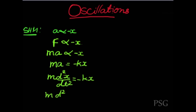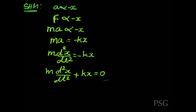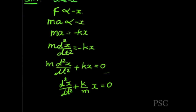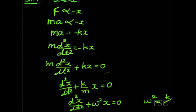This can be further written as m times d²x/dt² equals minus kx. Bringing the right-hand side to the left: m·(d²x/dt²) + kx = 0. Dividing the whole equation by m gives d²x/dt² + (k/m)x = 0. This can also be written as d²x/dt² + ω²x = 0, where ω² = k/m.